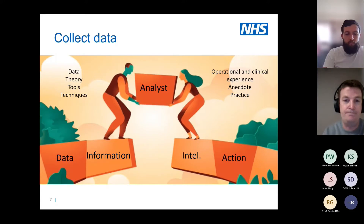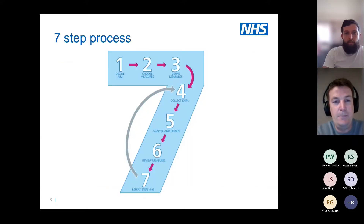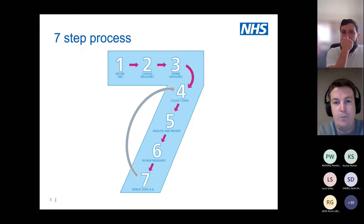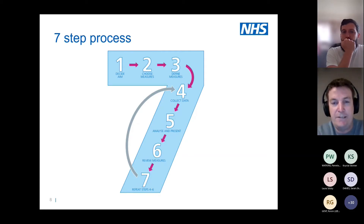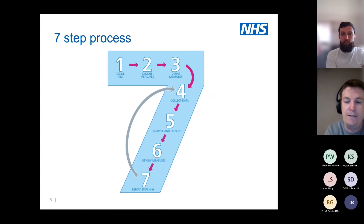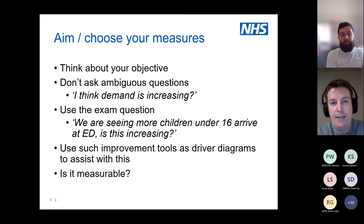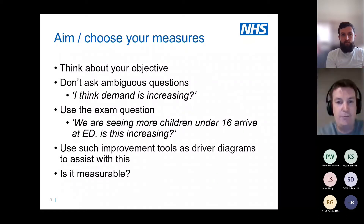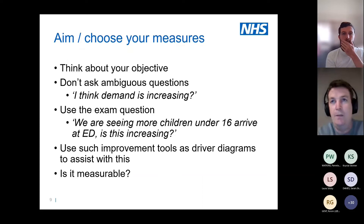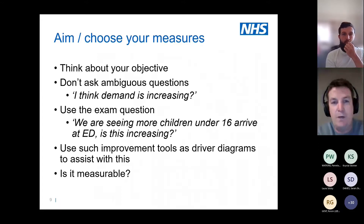The measurement for improvement journey has a seven-step process, broadly split into two areas: stages one, two, and three, which are pre-improvement, and steps four through seven, which look at how to analyze, present, and visualize the data. When it comes to your aim and choosing your means, you really need to think about your objective — what are you actually trying to achieve through this improvement journey? When I worked at a trust, I regularly got asked relatively ambiguous questions.